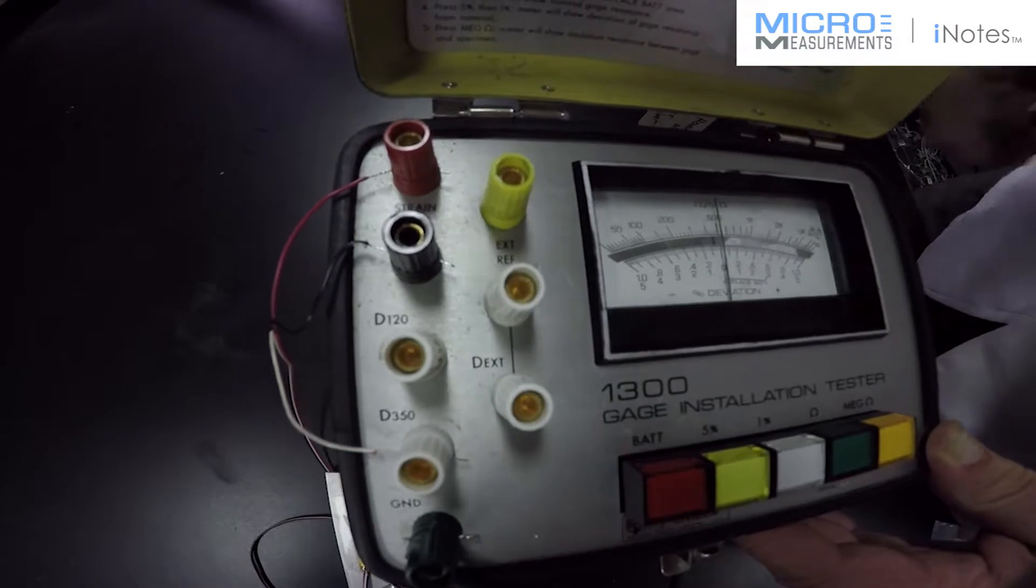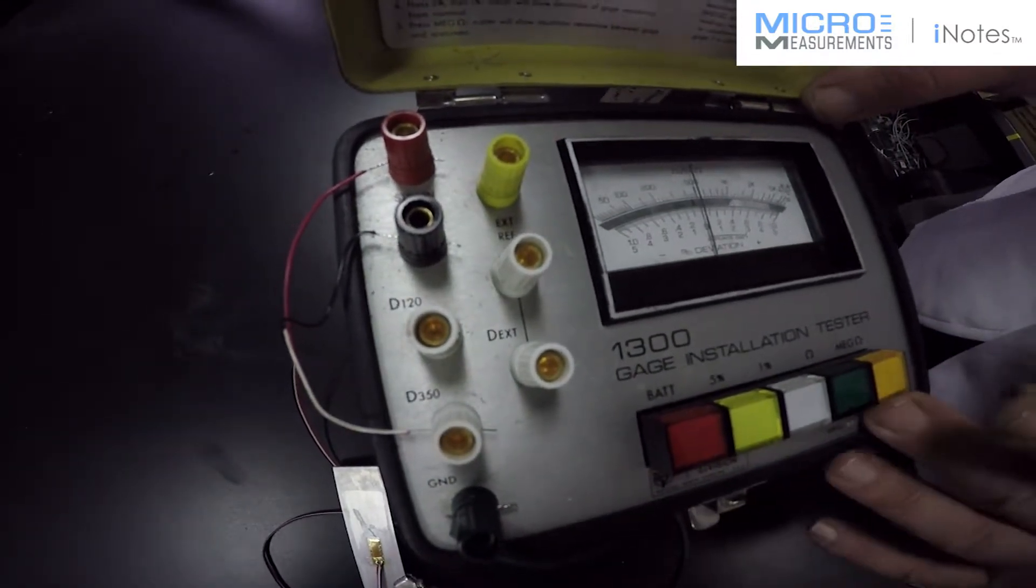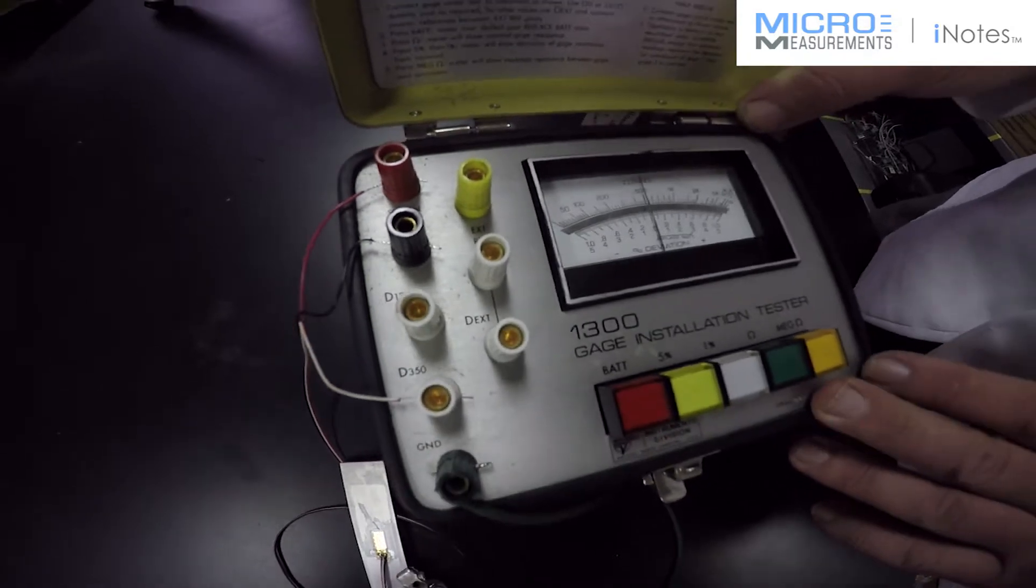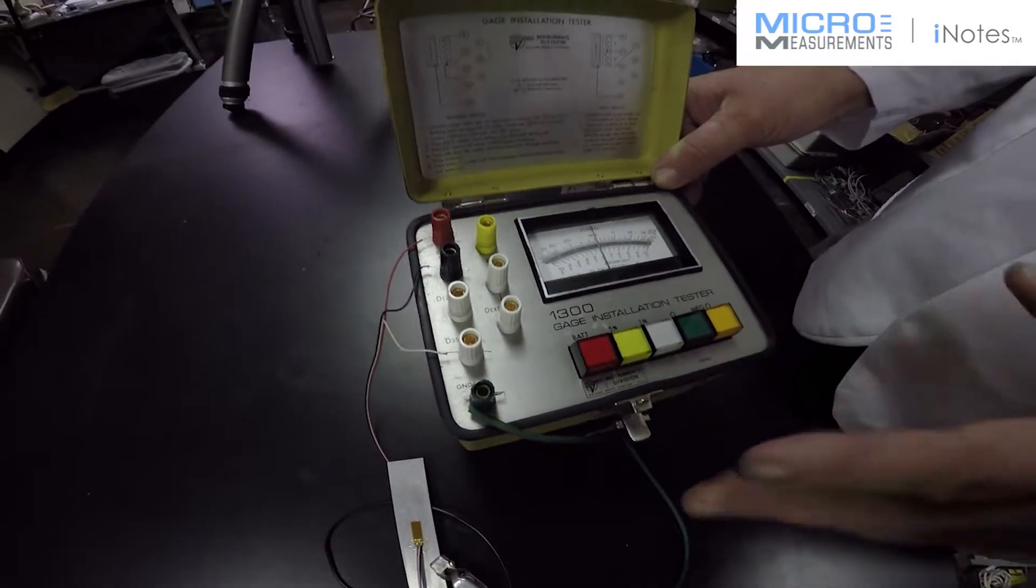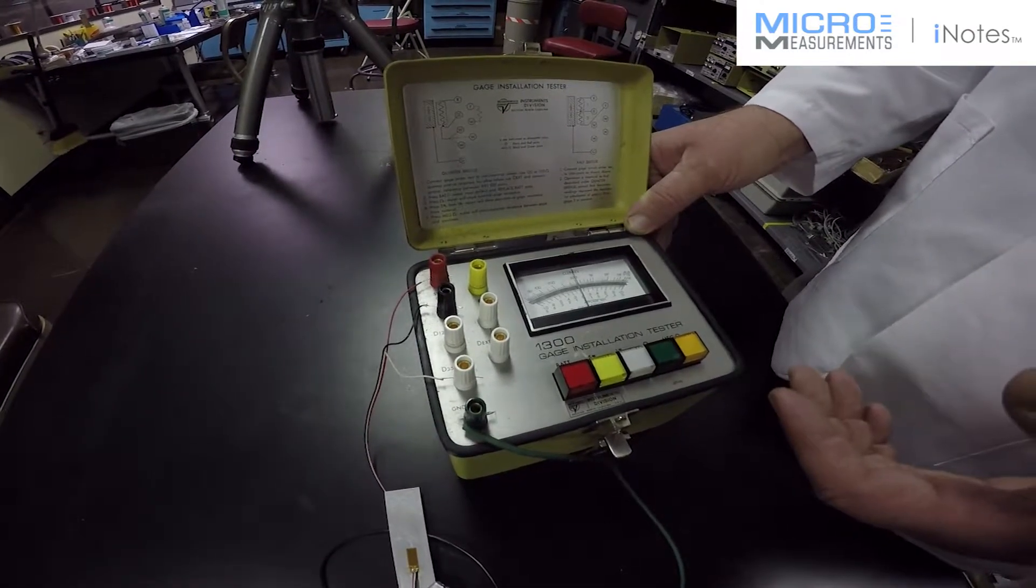What this instrument does is it really does a test to make sure that your strain gauge is going to function correctly electrically. This is typically done before the test and before you'd put on a protective coating.